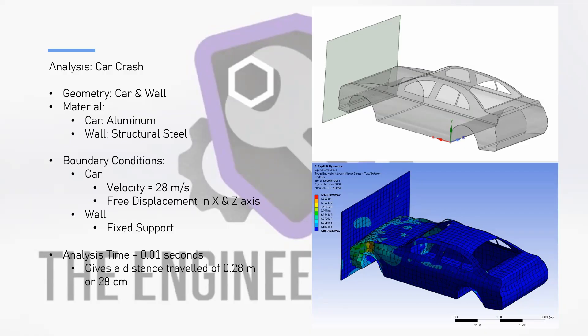As far as materials go, the frame of the car is going to be aluminum and it's going to be striking a structural steel wall. As for boundary conditions, the car is going to have a velocity of 28 meters per second, roughly equivalent to 100 kilometers per hour. We're going to initialize free displacement in the X and Z directions, and in the Y direction it's going to have zero displacement. This ensures that the car stays at a level height and is allowed to warp and move in the plane it is translating on. The wall is going to be fixed with a fixed support.